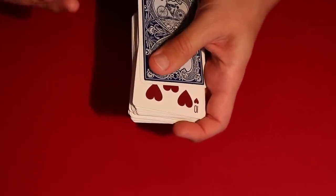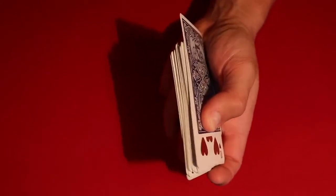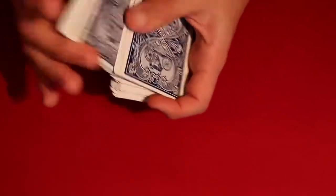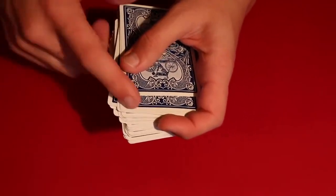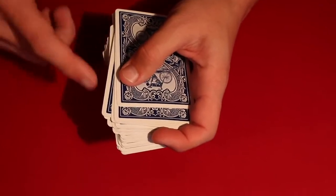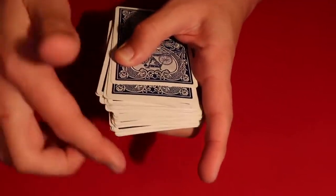You take one more card and you purposely out jog it as you guys can see. It's farther out than the rest of the cards, and then you can just complete the rest of the cards. And then what you do, you can continue to overhand shuffle the cards to make it look like the cards are kind of leaning in this direction, that way they can't see from the top that you actually have this out jog card right here.